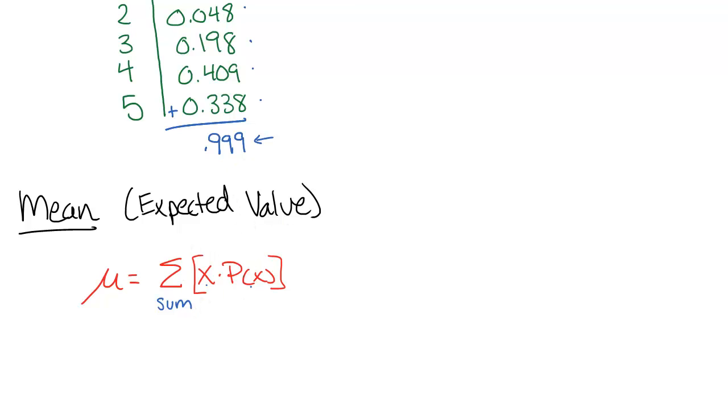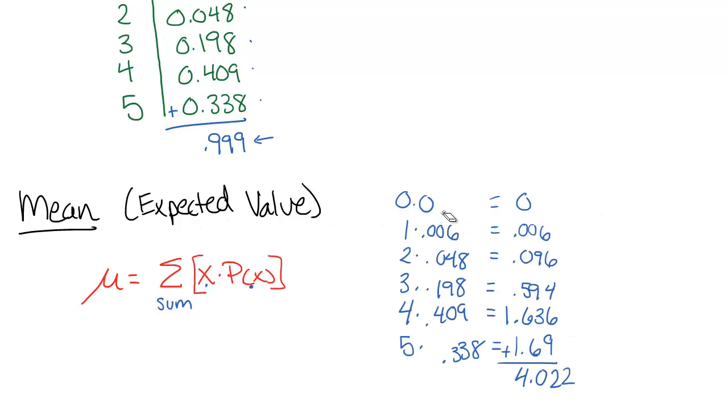So here's our formula. Remember that capital Greek letter sigma means sum. So we're going to add up x times the probability of x for each of the values that we've got. So from the table above, I'm taking x times the probability of x for each of these possible outcomes, do all the multiplications, and then finally add up the total. And this is our expected value here.